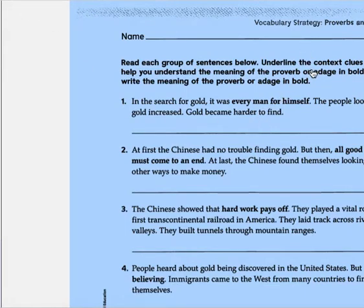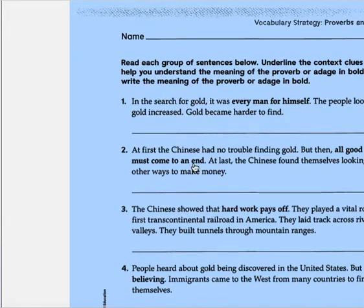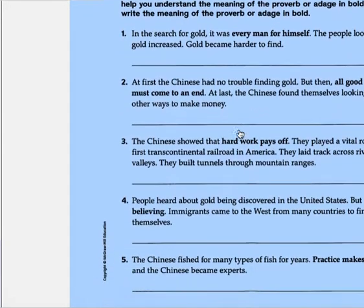This page is fun. These are almost like idioms, but they're called proverbs and adages. The main thing about proverbs is they kind of teach you a lesson using real life. Adages are like short sayings — little phrases. For example: 'Every man for himself,' 'All good things must come to an end,' 'Hard work pays off,' 'Seeing is believing.' You have to read the sentences and use your context clues to try to figure out what it means, then tell me in your own words what it means.